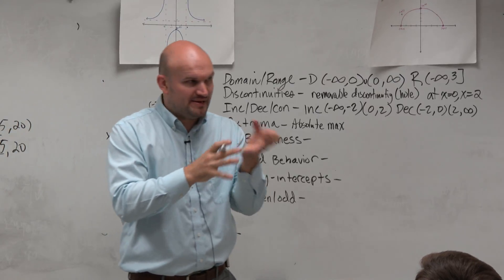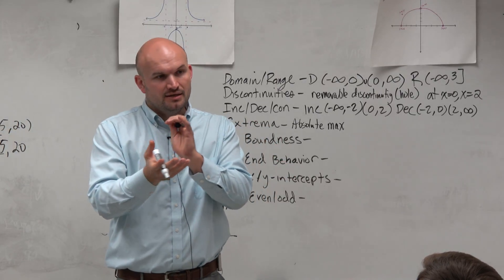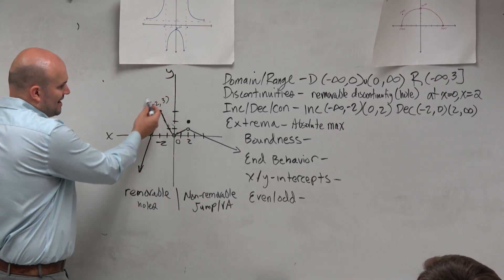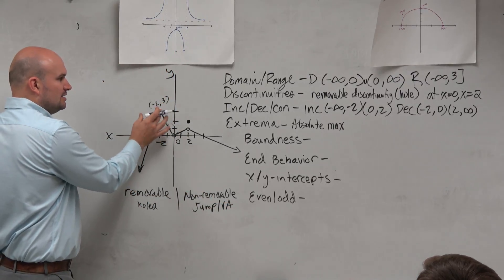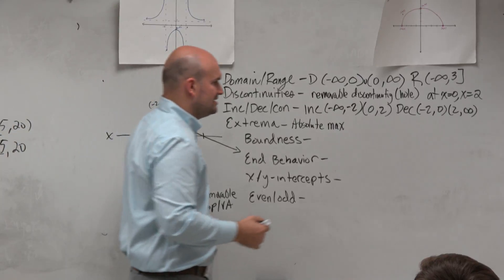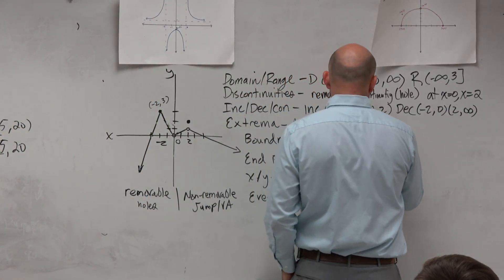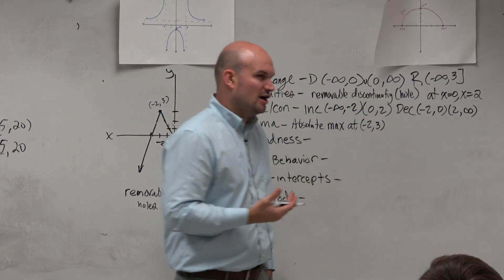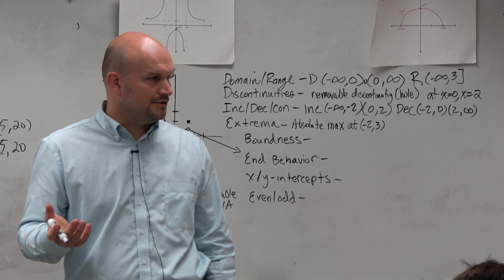I tell you that just because some questions are going to be worded differently, and they might ask you the same thing. A lot of times, though, obviously we're looking at the extrema, where we're talking about the location and the value. So we could just say it's absolute maximum at the coordinate point, negative 2, 3. So this way we're covering the location as well as the value.